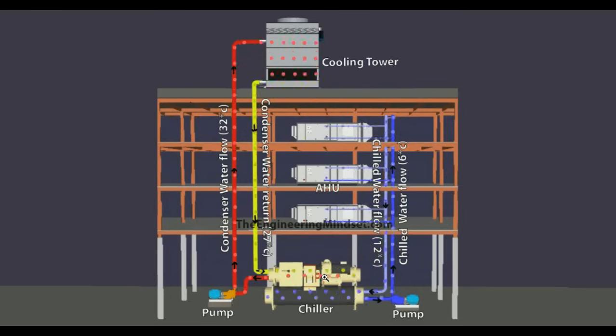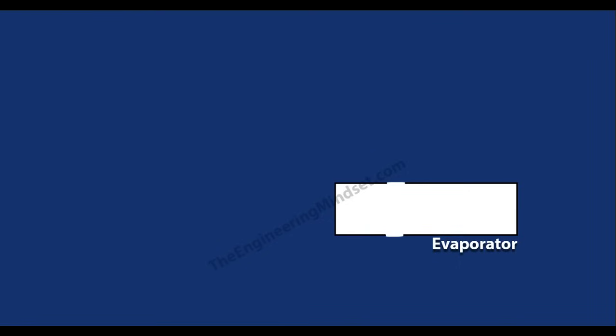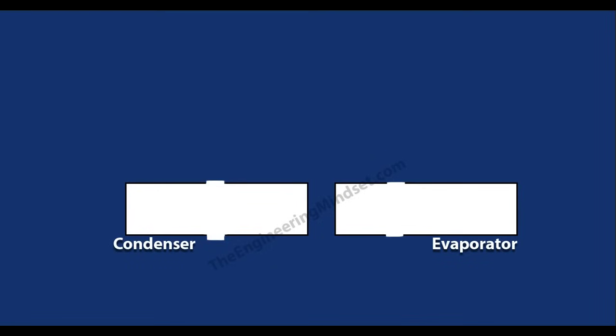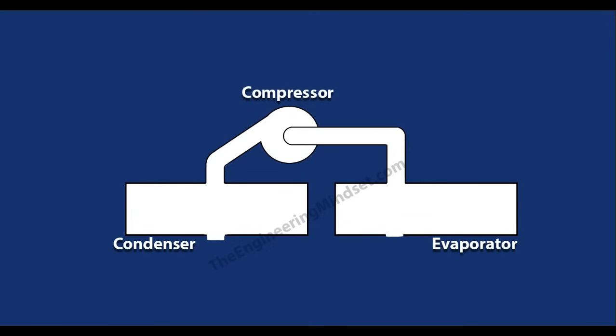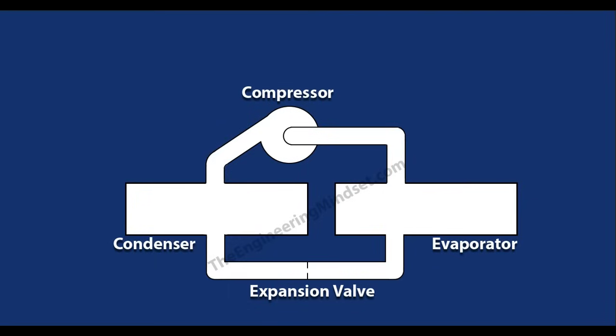Let's look at what's happening inside this device. There are many designs for a chiller, but these are the four main components which will appear in every single one of them — so grab a piece of paper and pen and write this down. Firstly we have the evaporator, then we have the condenser, then we have the compressor up on the top, and down below we have the expansion valve. Every one of these four components is essential to the operation of a chiller — a chiller cannot work without any one of them.